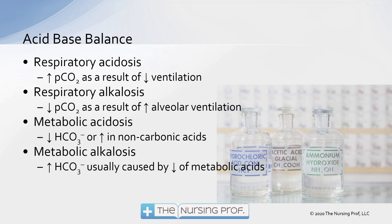Here are some common acid-base imbalances. Keep in mind that if you want to learn how to analyze arterial blood gases, watch our video, The Six Easy Steps to ABG Interpretation. Respiratory acidosis is the result of decreased ventilation and a buildup of CO2. Respiratory alkalosis is the result of increased alveolar ventilation and a decrease in CO2 — blowing off that CO2. Metabolic acidosis results when we have too many acids, too much hydrogen ion, and not enough bicarb. Metabolic alkalosis, on the other hand, results from having not enough acids or too much bicarb in the blood.